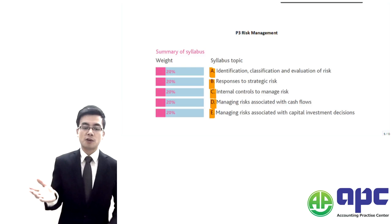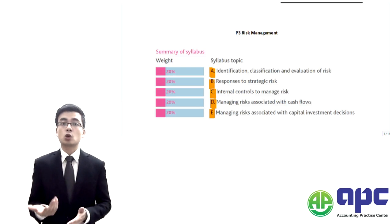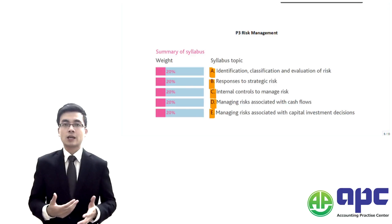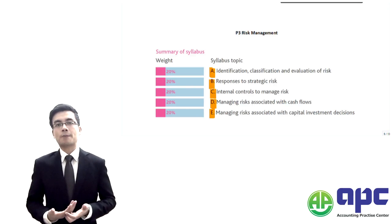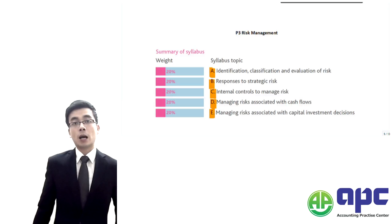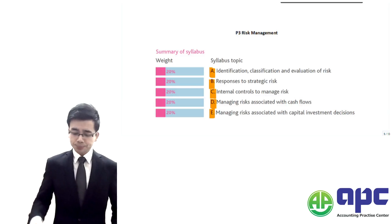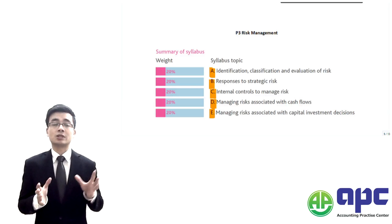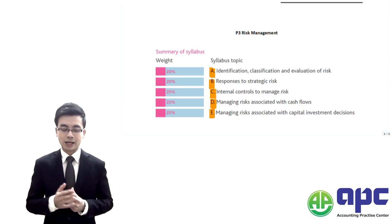To be perfectly honest with you, some of the risk management tools you've seen in early papers you've studied, including CIMA E1 and CIMA P1, for example. Some of the tools you've seen, but some you may not have seen.